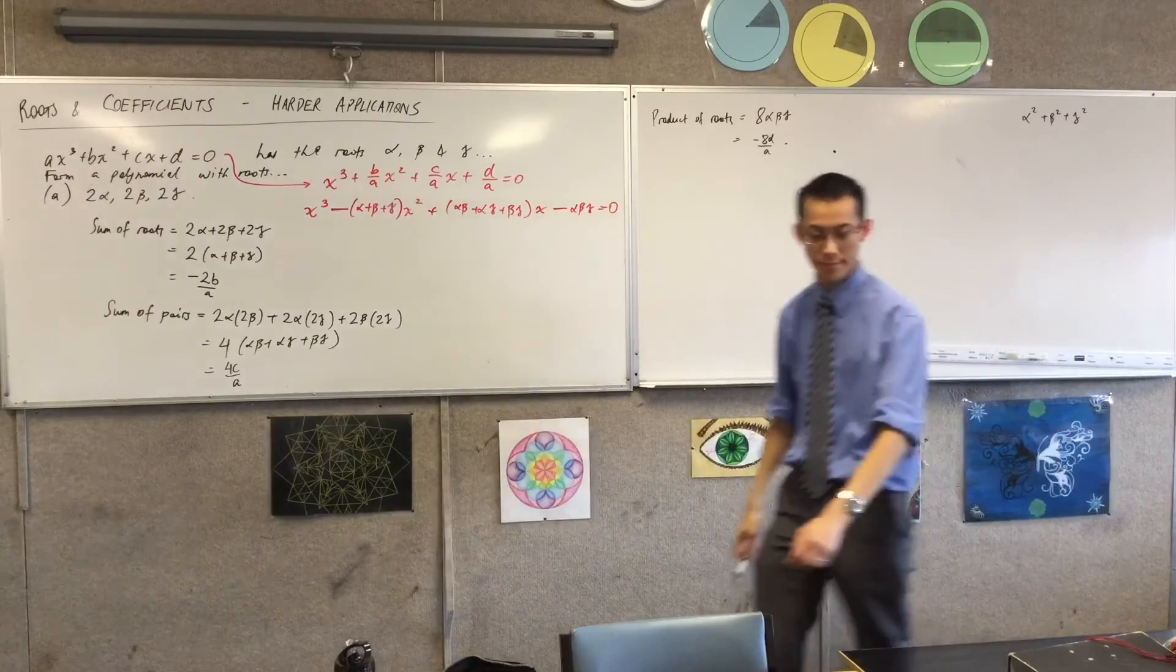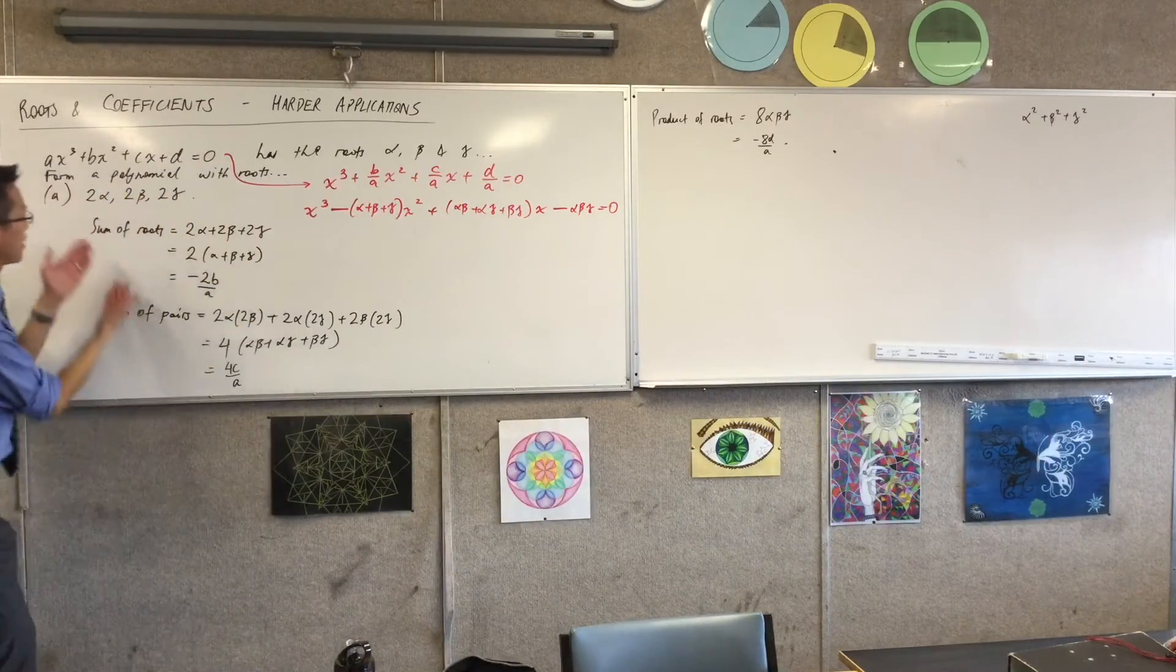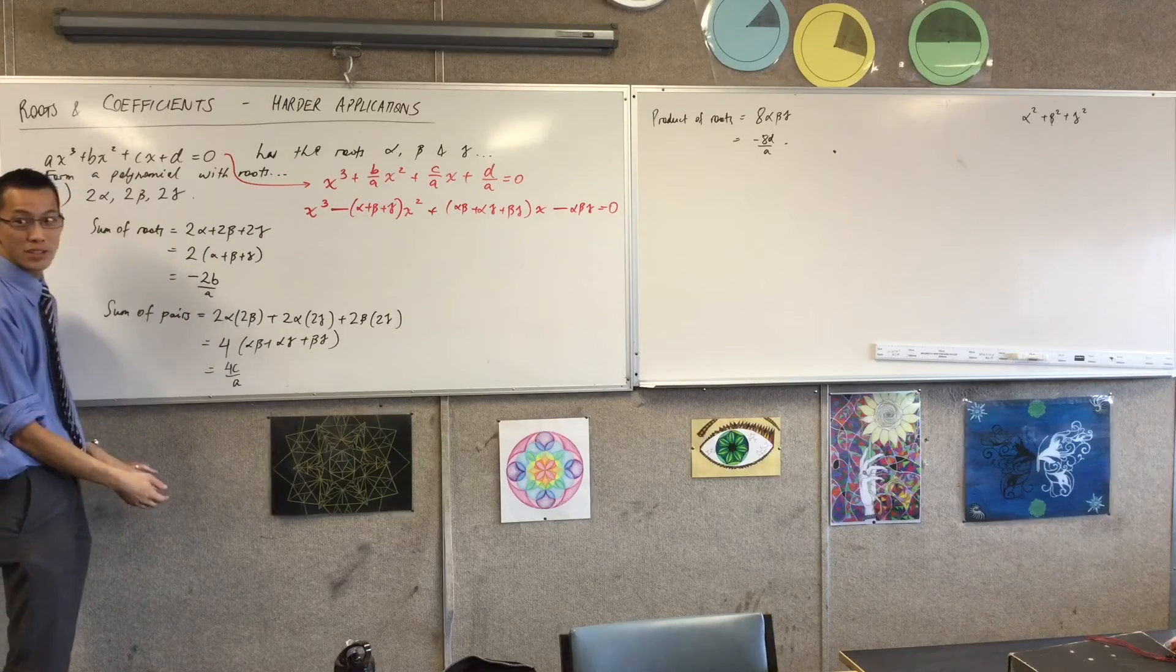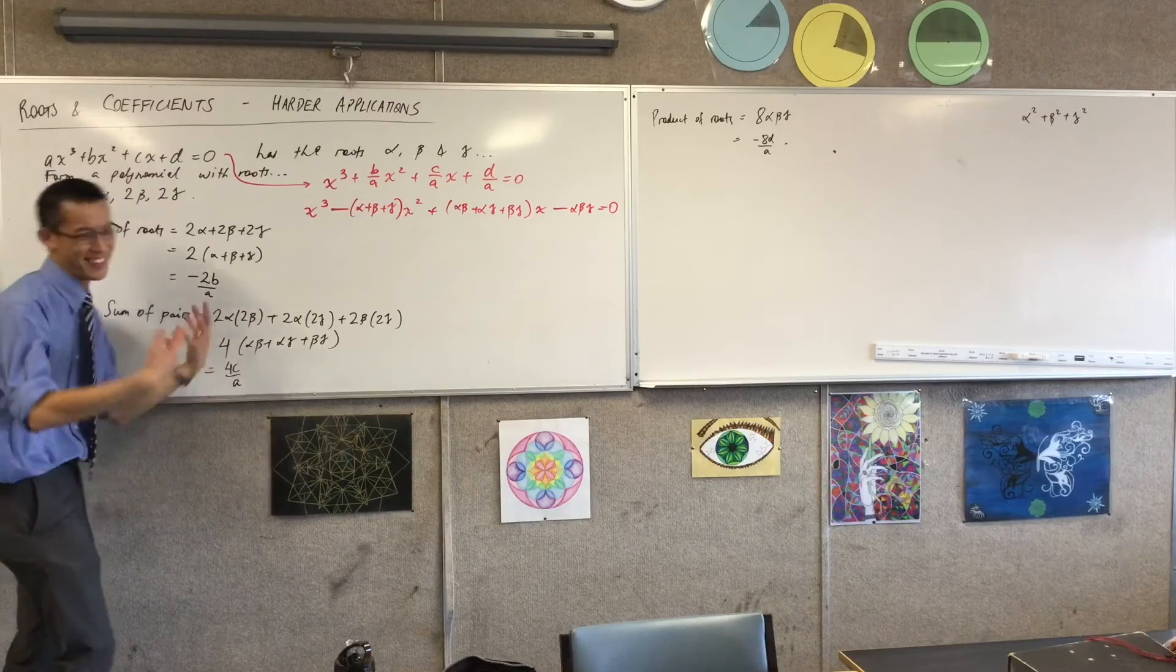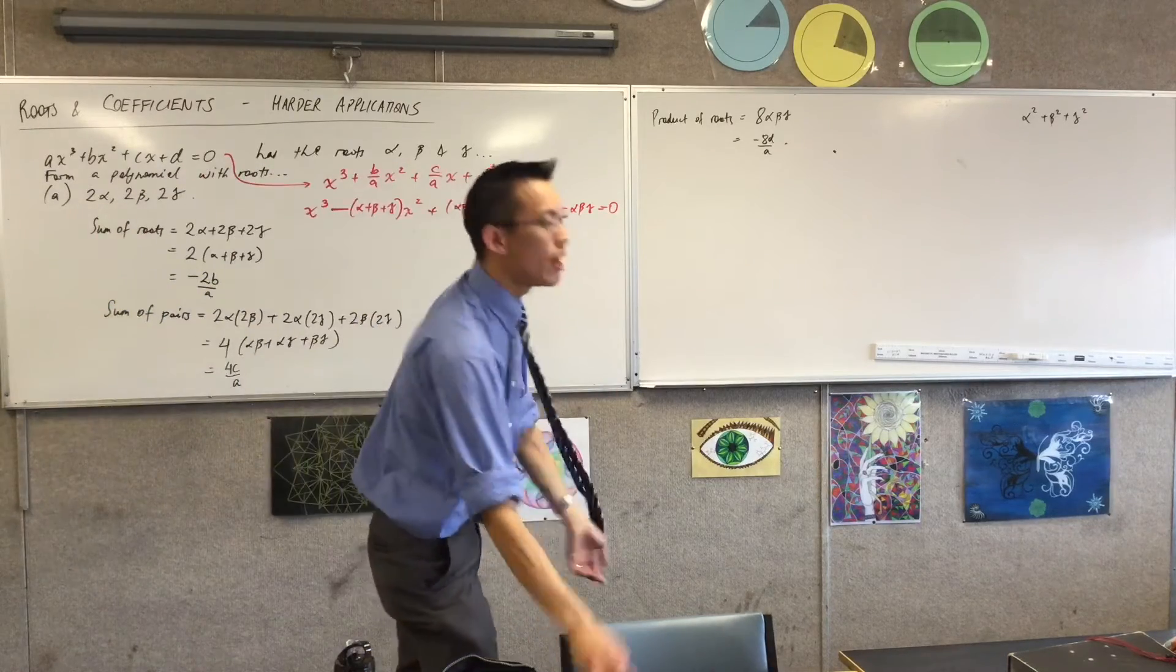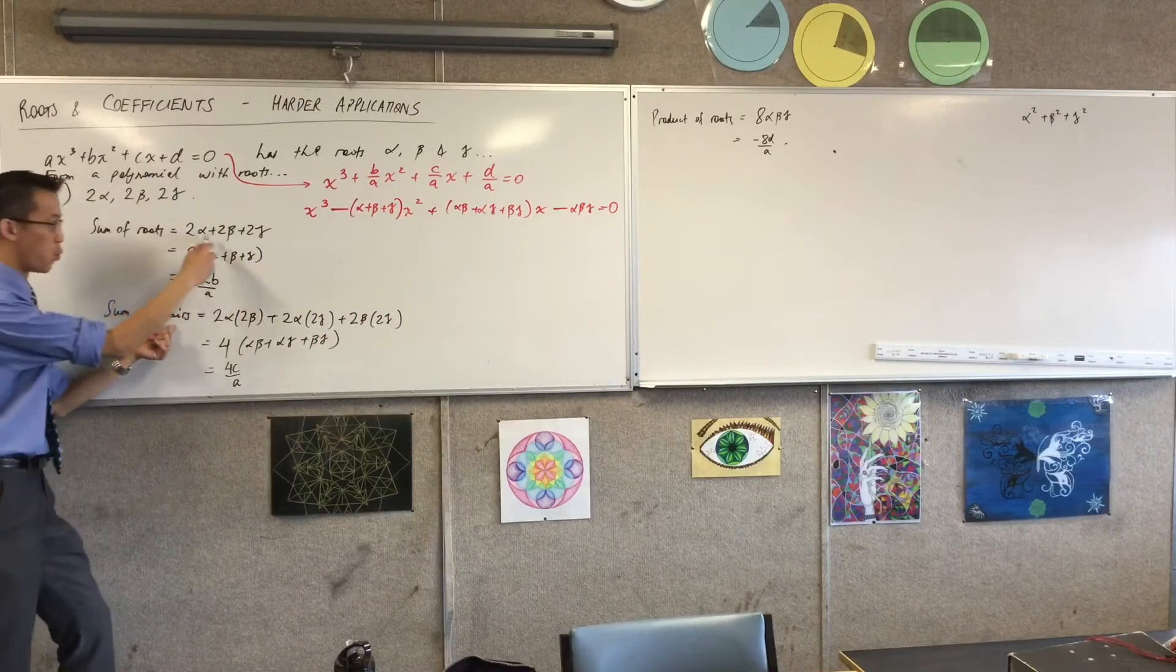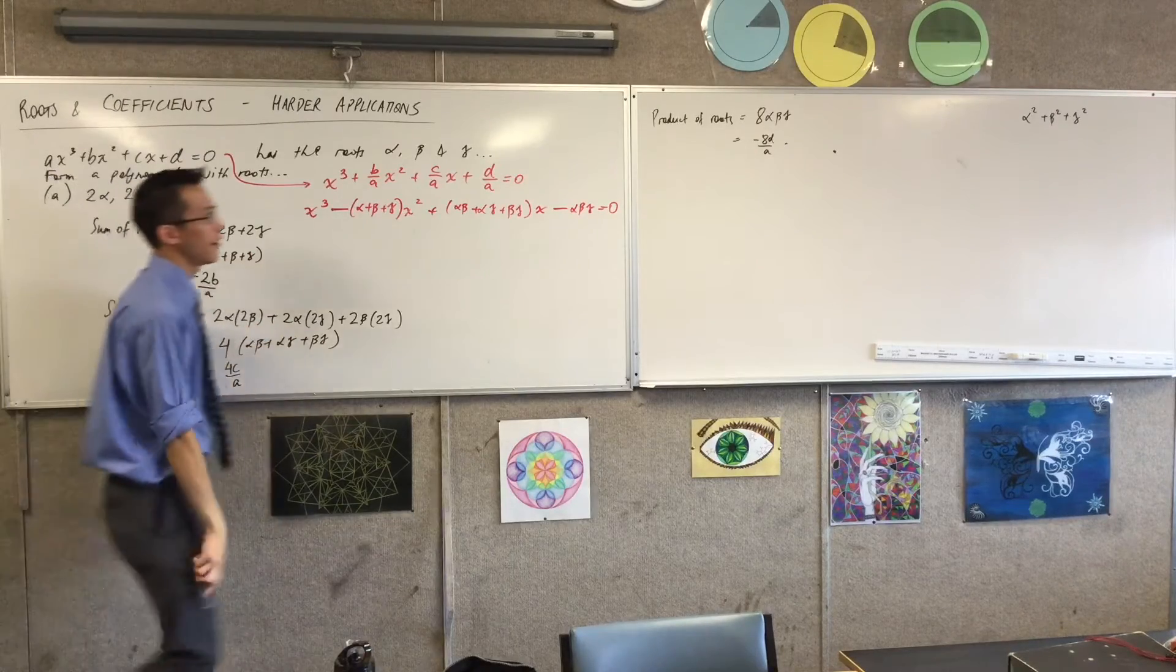Fantastic. So I would say sum of roots, sum of pairs of roots, sum of triples of roots, sum of quartets of roots? Pentopolis? I don't know. You just keep on going. I mean, the general way of saying it, rather than using this language, is to say sum of roots one at a time, sum of roots two at a time, sum of roots three at a time.